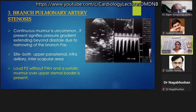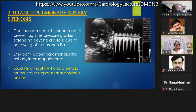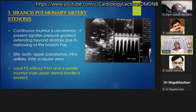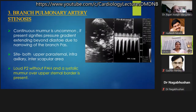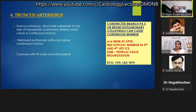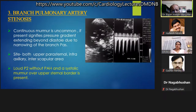Branch pulmonary artery stenosis: a continuous murmur is uncommon but when present, signifies a pressure gradient extending beyond diastole due to narrowing of branch pulmonary arteries. It is heard in both upper parasternal, infraaxillary, or interscapular areas. An important examination point: loud P2 without pulmonary hypertension should raise suspicion of branch pulmonary artery stenosis, which can also have a continuous murmur.